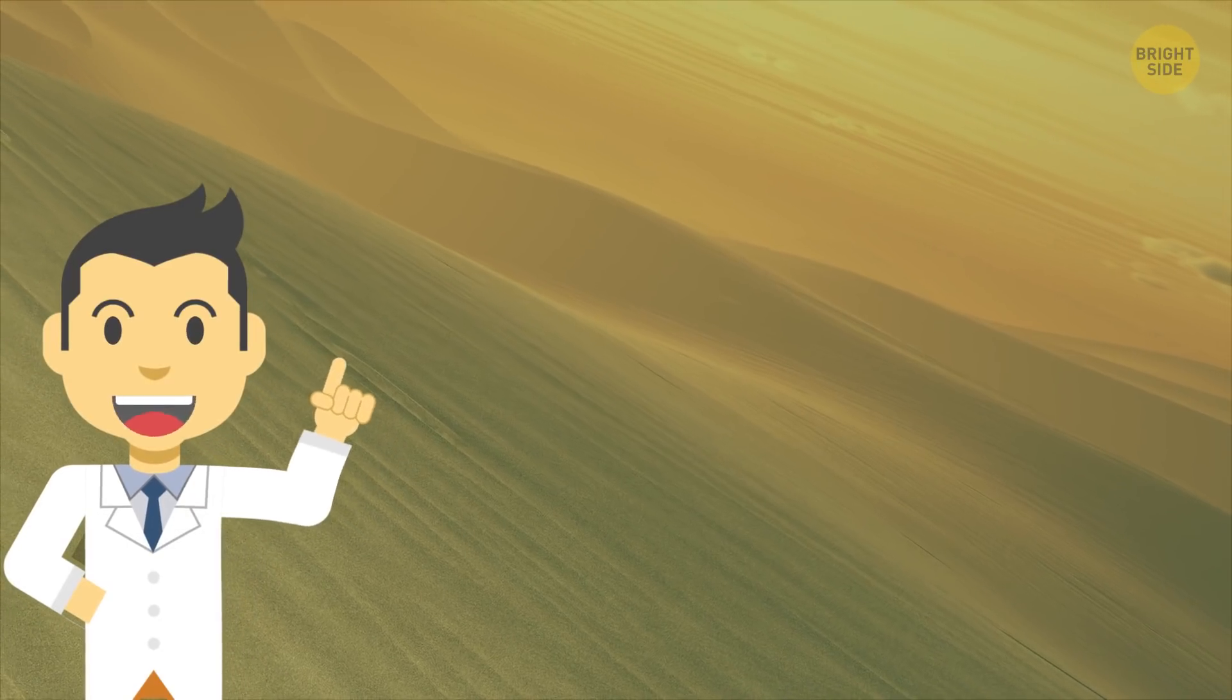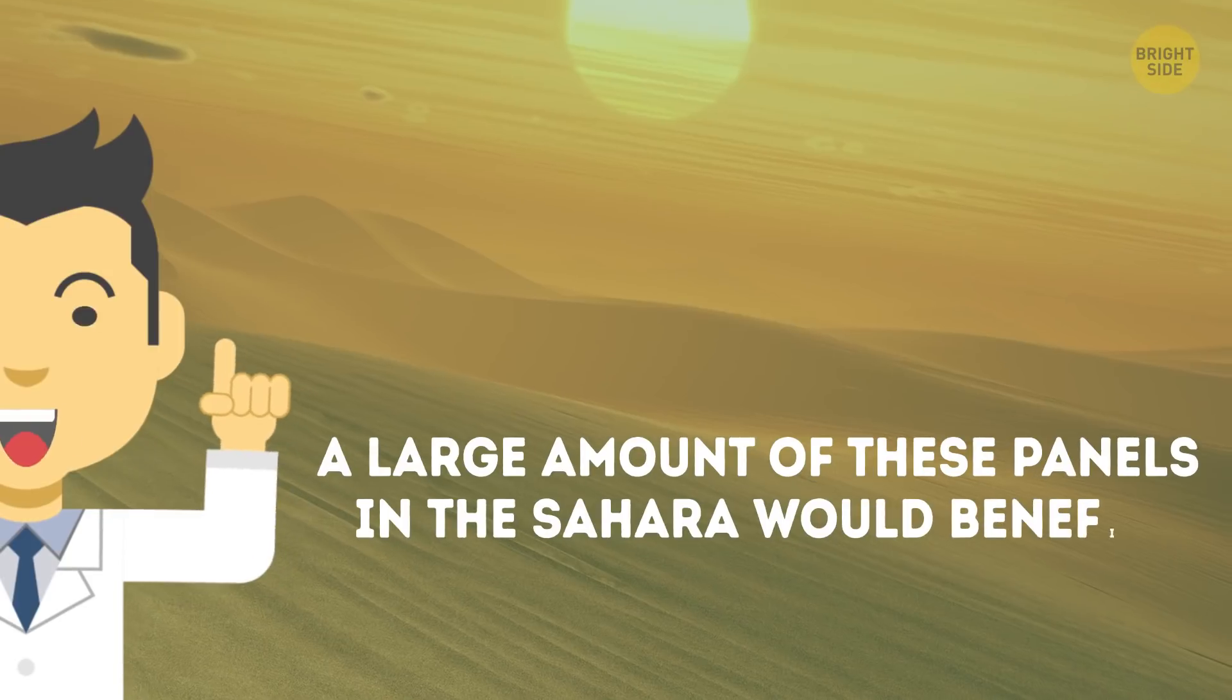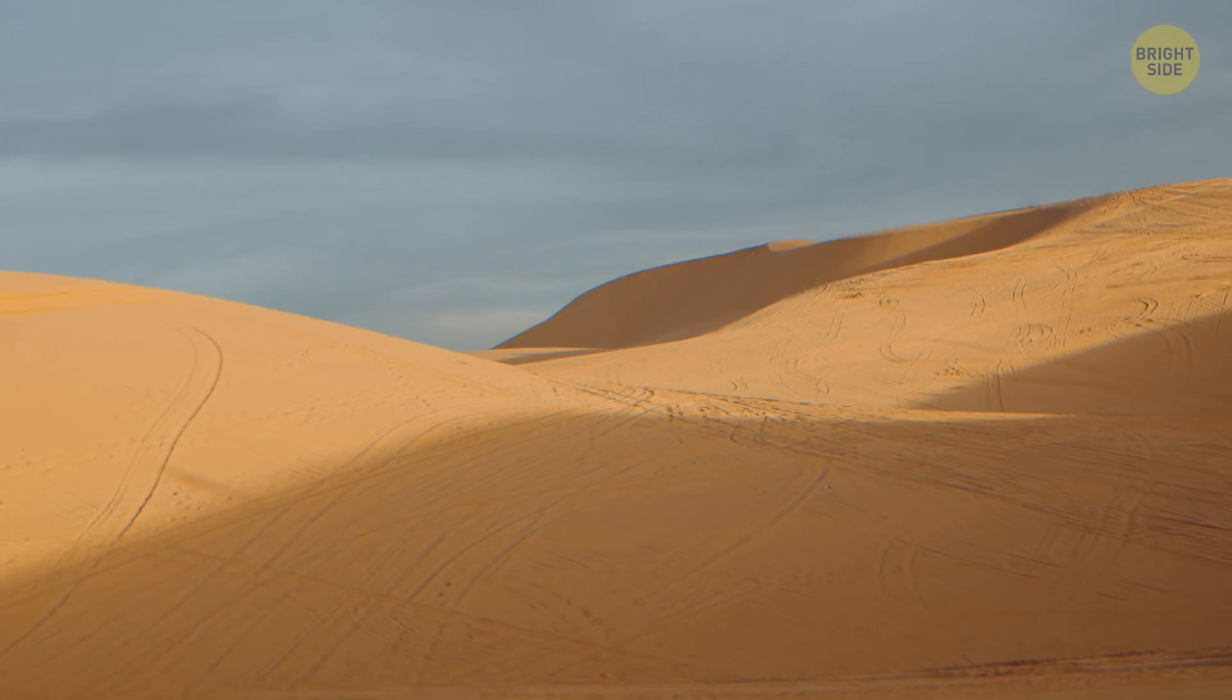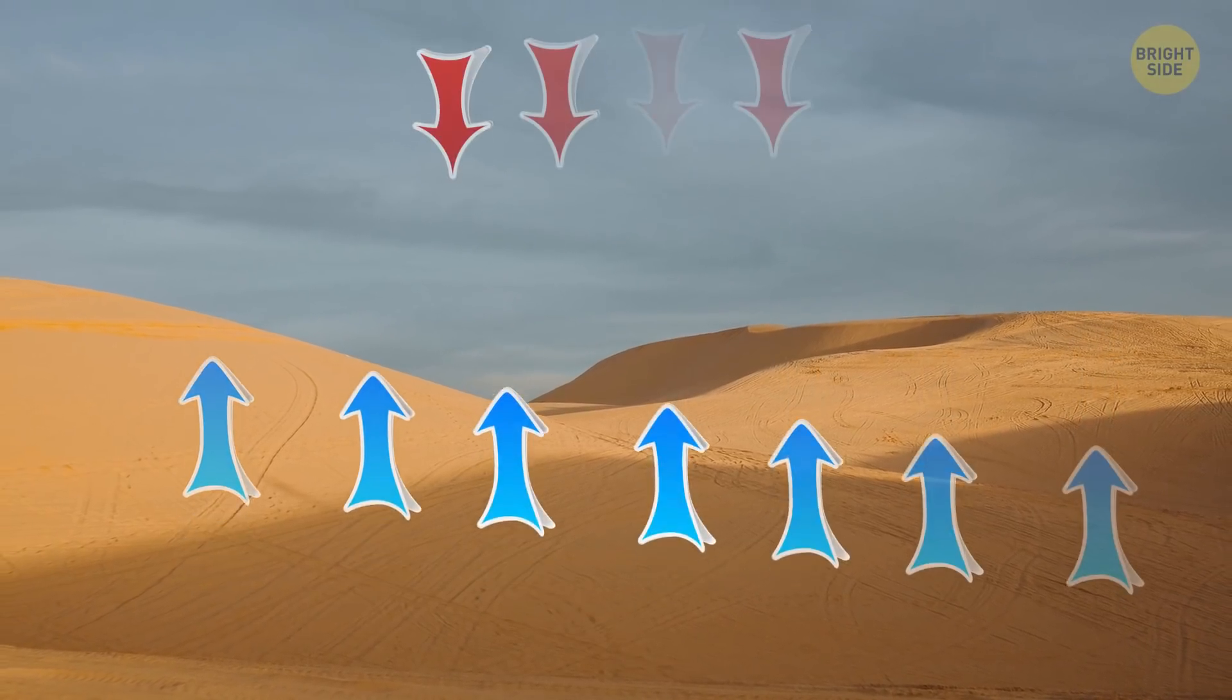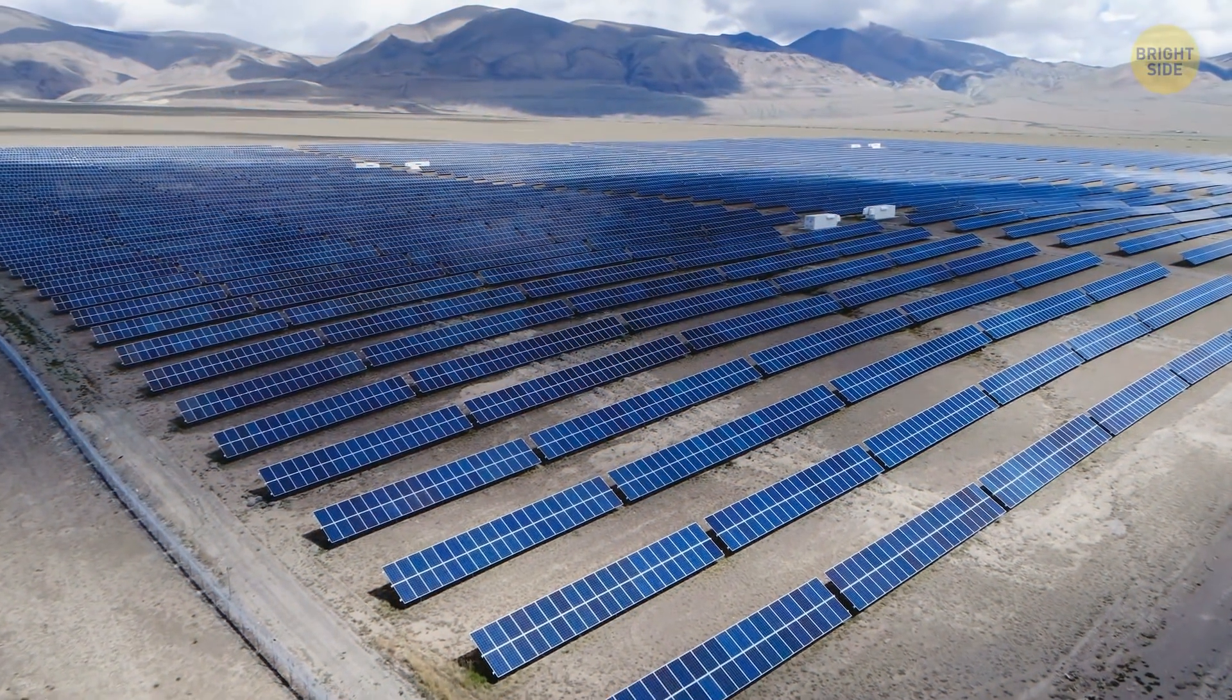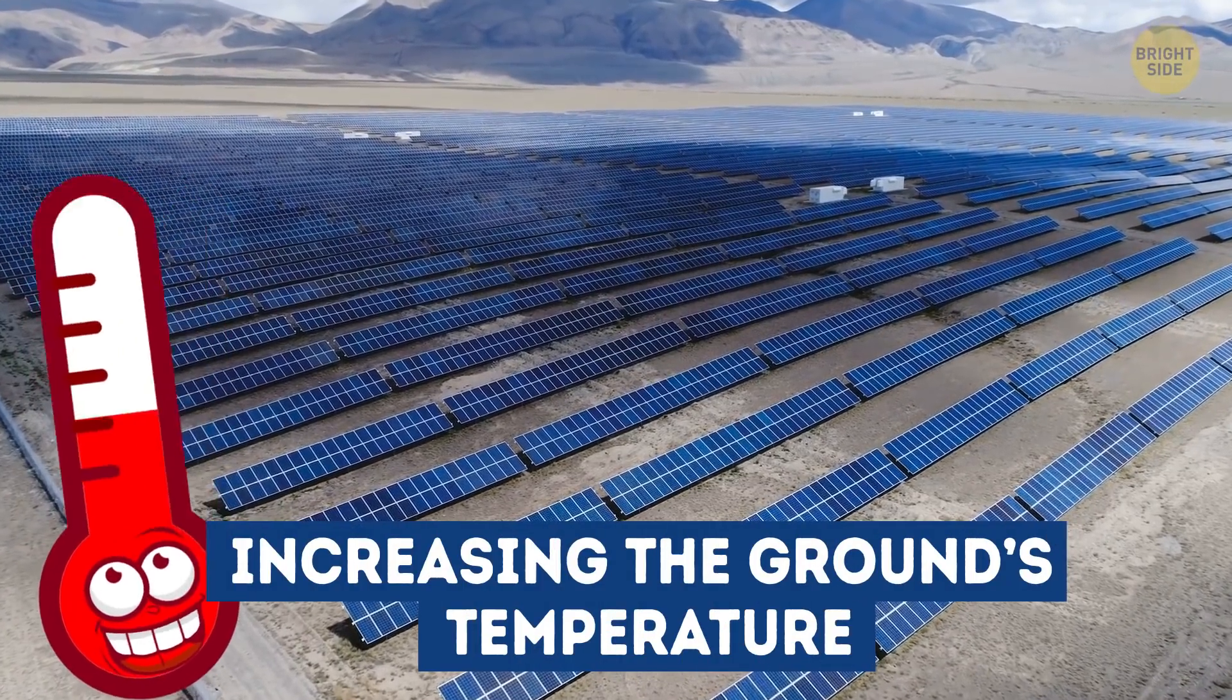As an added bonus, Dr. Yan Li, a researcher from the University of Illinois, explains that a large amount of these panels in the Sahara would benefit the desert climate, too. Stay with me here, it gets a little complicated. The color of the sand there is quite light, so it reflects a lot of sunlight back into the atmosphere. So dark-colored solar panels would make the surface take in more of the sun, increasing the ground's temperature.